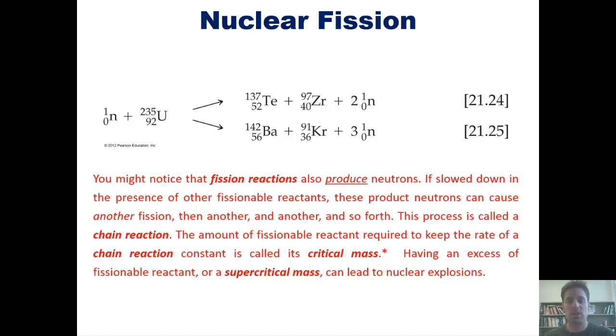You might notice that fission reactions also produce neutrons. If these neutrons are slowed down in the presence of other fissionable reactants, they can cause another fission, and then another, and another, and so forth. This process is called a chain reaction.